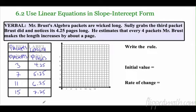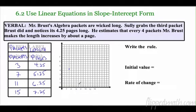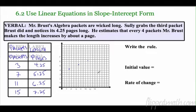Let's graph this. For three packets it'd be about four and a quarter — four and a quarter is right in between. Seven packets is going to be five and a quarter, eleven packets is six and a quarter, and fifteen packets is seven and a quarter, right about there. You can see we have a nice linear situation going on right here.